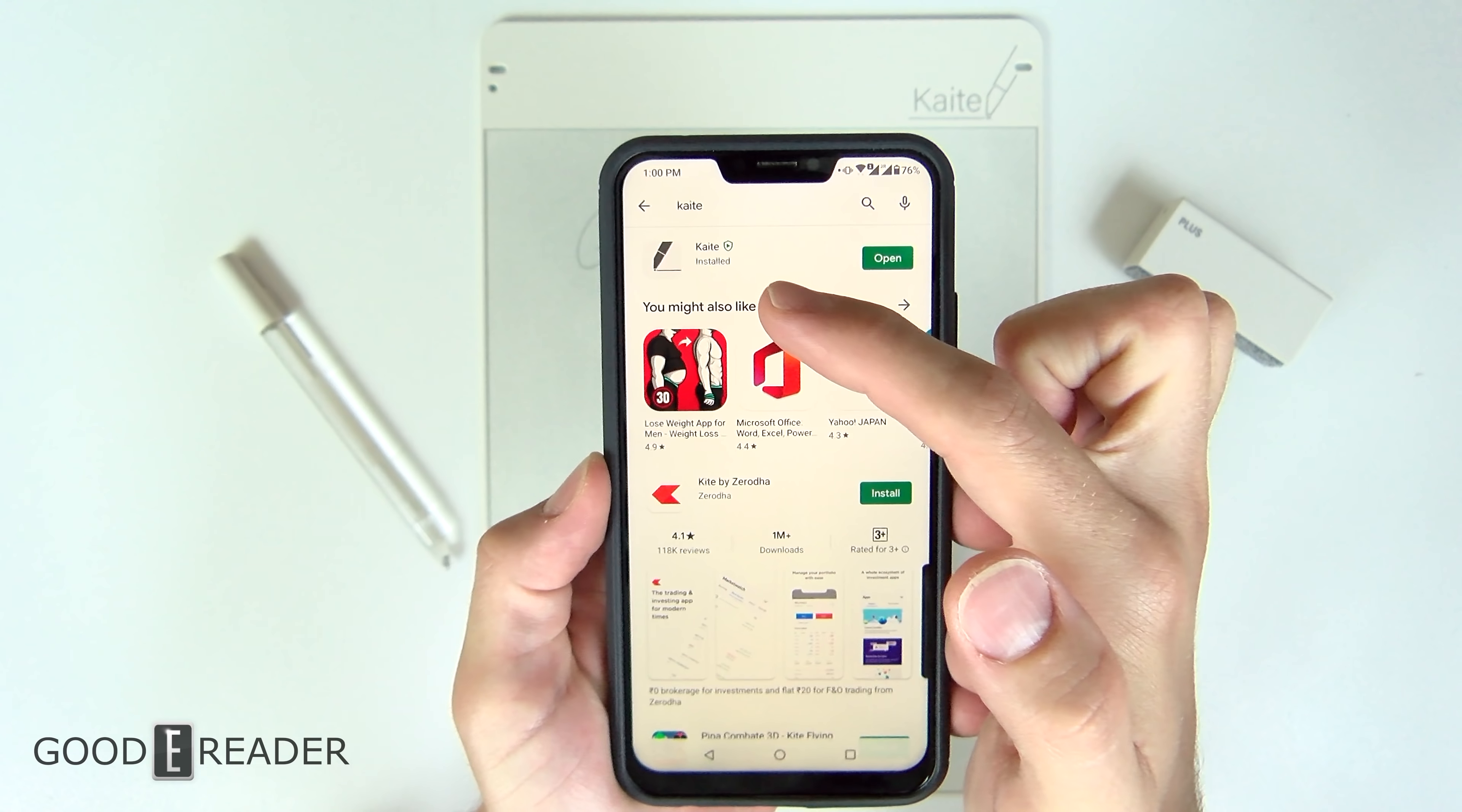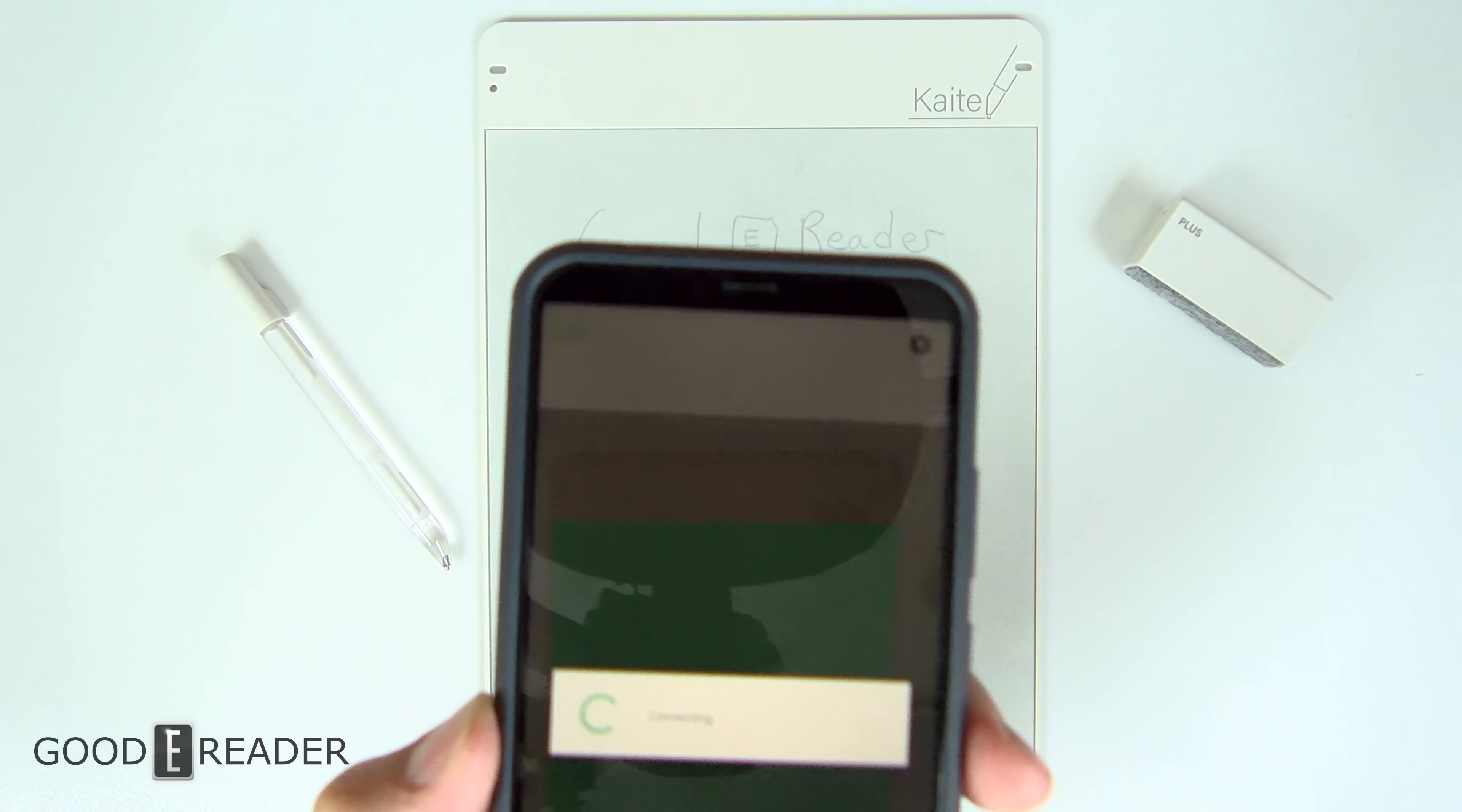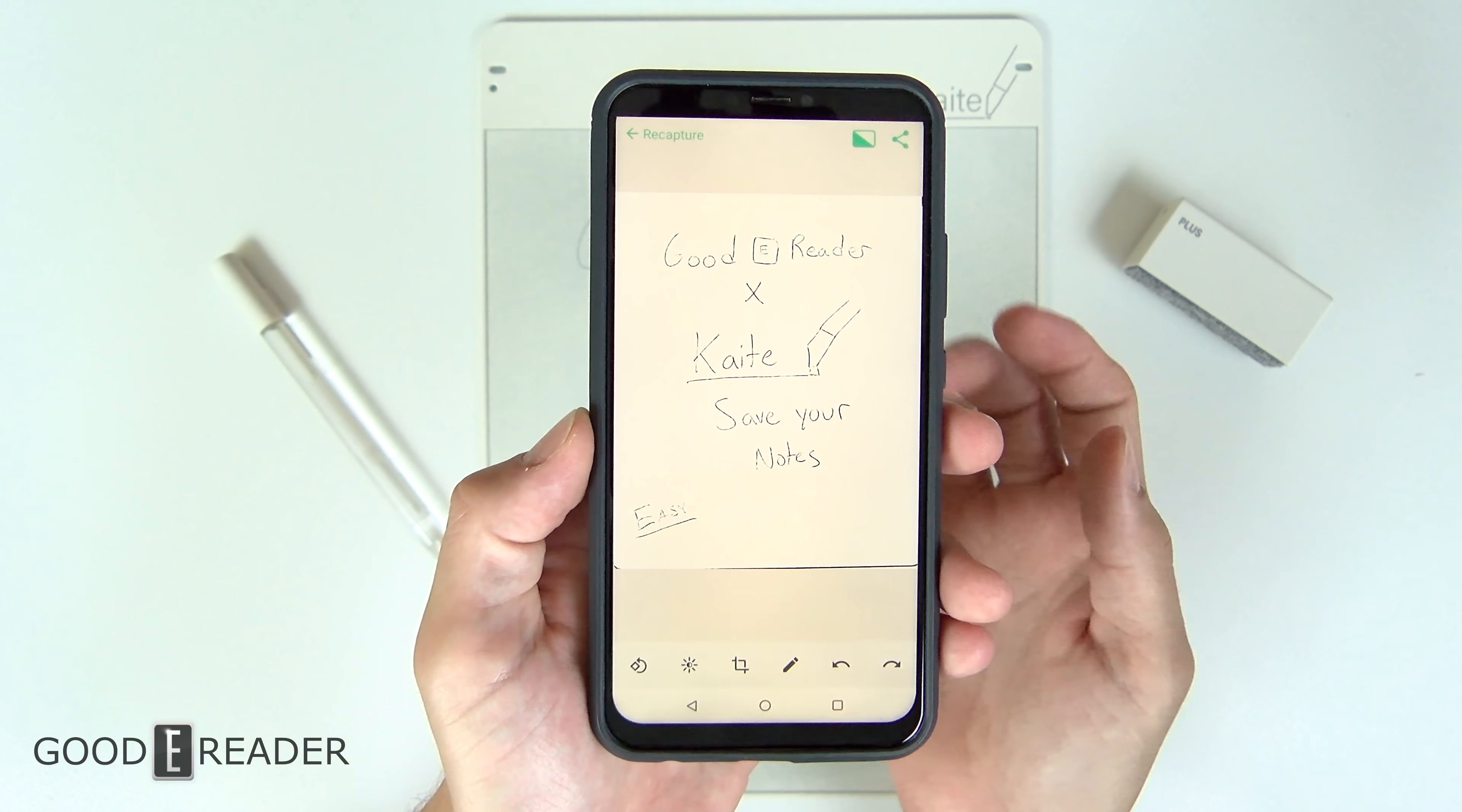Kaite themselves have an app on the Google Play Store, it's called Kaite. You literally just open it, point your camera at the screen, and without even taking a picture, which you can do, it immediately takes a picture of what you have written.